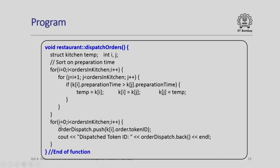For i equal to 0 to orders_in_kitchen — suppose there are 4 or 10 orders — one by one we take the order token_id of the ith element of k and push it onto order_dispatch. For confirmation, we print that the dispatch token ID is so and so. So in dispatch_orders, we assumed orders are prepared as per their preparation time, sorted the array on preparation time, and then simply push sequentially from that sorted array, one order after another, to the dispatch queue.